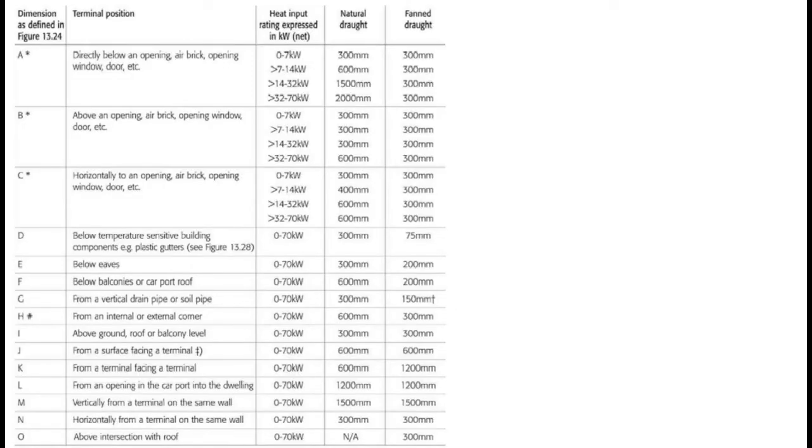There again is a simplified version of the chart you've got in the Viper book. And you can see across the top, it says terminal position, heat input, because the size of the appliance counts, and whether it's a natural draft or fan draft appliance. These things make a difference to where you can place your terminal.